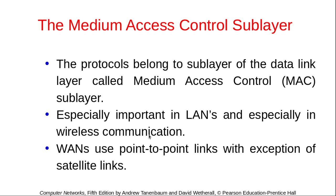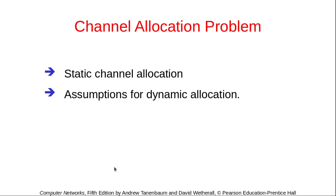The MAC sublayer is important for LANs as well as in wireless communications. In the context of WANs, they basically use point-to-point links, but in the case of satellite links they use broadcast links. Now we'll see the channel allocation problem from two perspectives: one is static channel allocation, and then we'll see the assumptions for dynamic allocation.